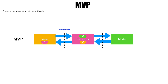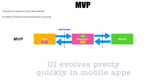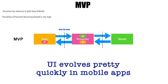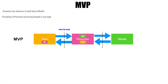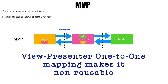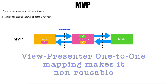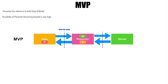In MVP, the Presenter has a reference to both the View and the Model. The possibility of the Presenter becoming bloated is very high because it has references to both. In mobile applications the UI always changes, so as the view changes it will have an impact on the Presenter. Also, you have to write too many Presenters — for every view you have a Presenter, and there is a one-to-one mapping between the view and the Presenter. You cannot share a common Presenter between multiple views, which makes your source code pretty large.